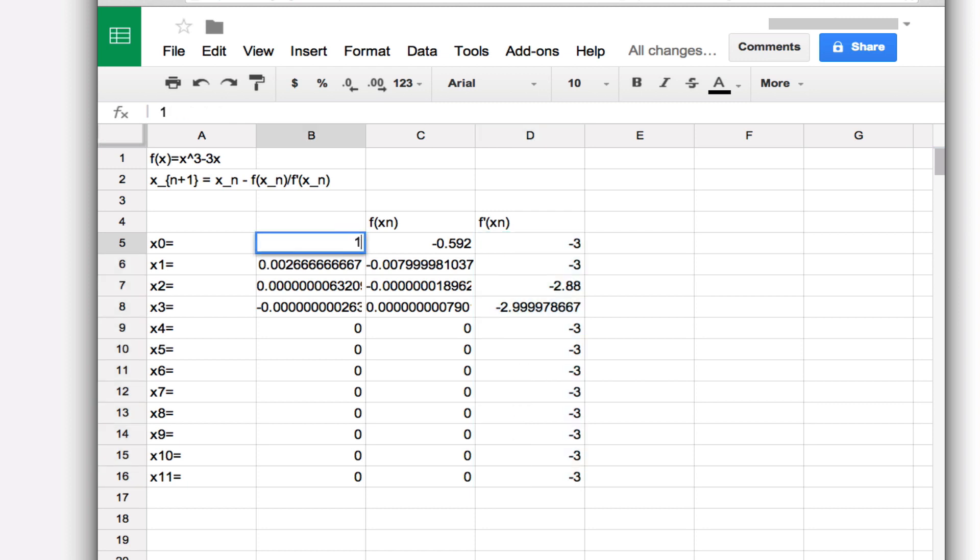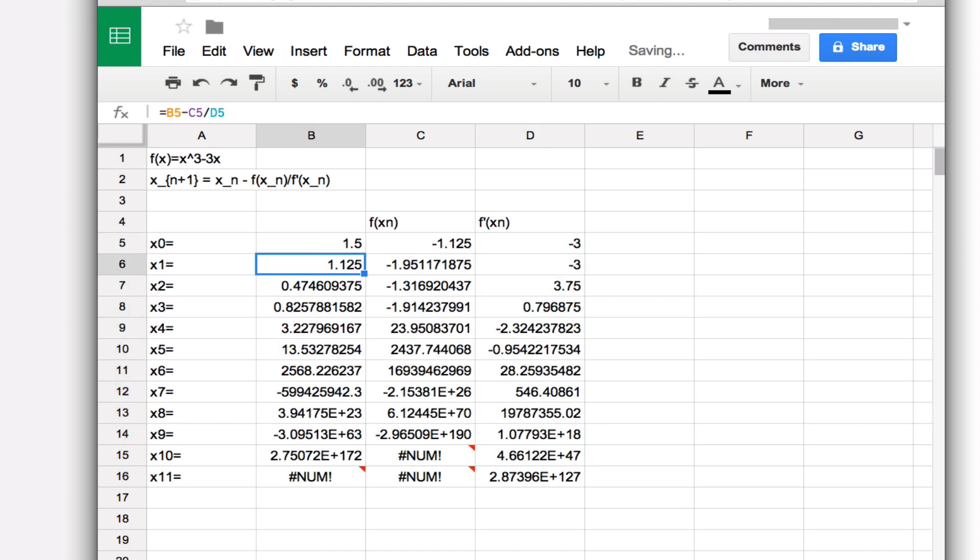So 1.5, where do we end up? What's happened here? Something went wrong.